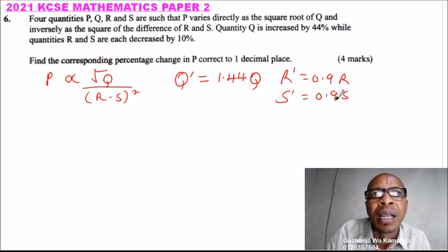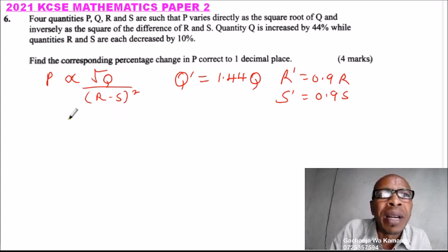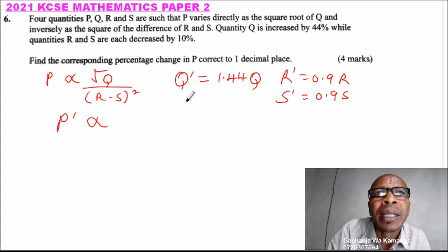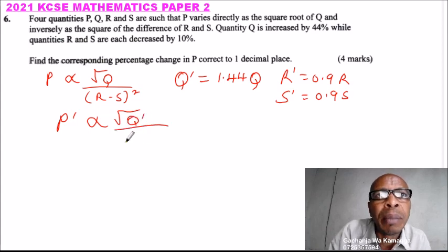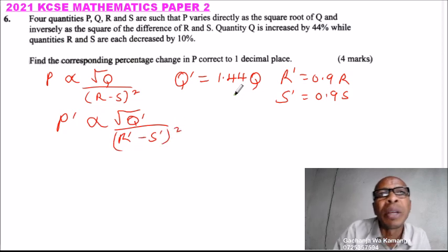So we can now get the new P. The new P varies with the new Q. We can first write it like this: the new Q divided by (R - S), the new S, and this is squared.